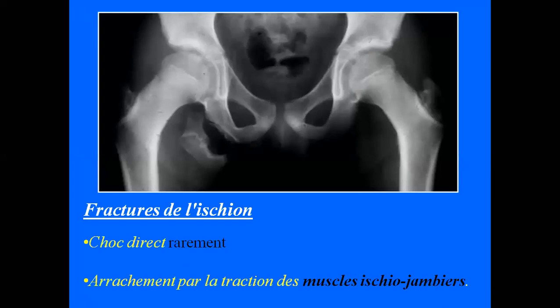Plus rarement, on a une fracture de l'ischion — une partie de la branche ischio-pubienne. Par choc direct, c'est rare, car cet os est bien recouvert par les grosses masses musculaires des fessiers. Mais cette lésion peut aussi être secondaire à un arrachement par traction des muscles ischio-jambiers — muscles postérieurs de la cuisse qui s'insèrent sur cette branche et qui, chez un sportif, suite à une contraction brutale, vont détacher leur insertion.